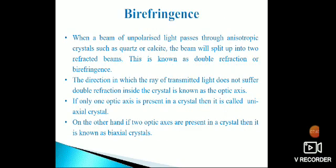By reference, when a beam of unpolarized light passes through an isotropic crystal such as quartz or calcite, the beam will split up into two refracted beams. This is known as double refraction or birefringence. The direction in which the ray of transmitted light does not suffer double refraction inside the crystal is known as the optic axis. When light passes through this optical axis, it will not get any disturbance and will go in a straight line. If only one optic axis is present in a crystal, it is called uniaxial crystal. On the other hand, if two optic axes are present, it is known as biaxial crystal.